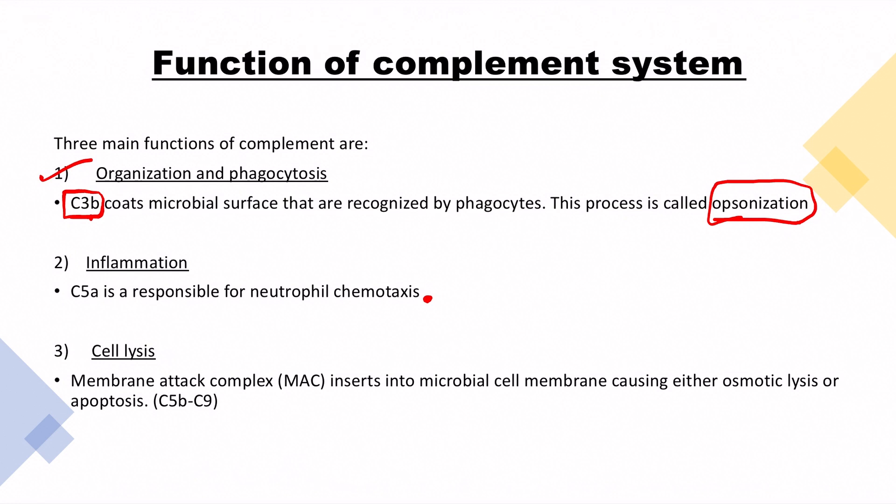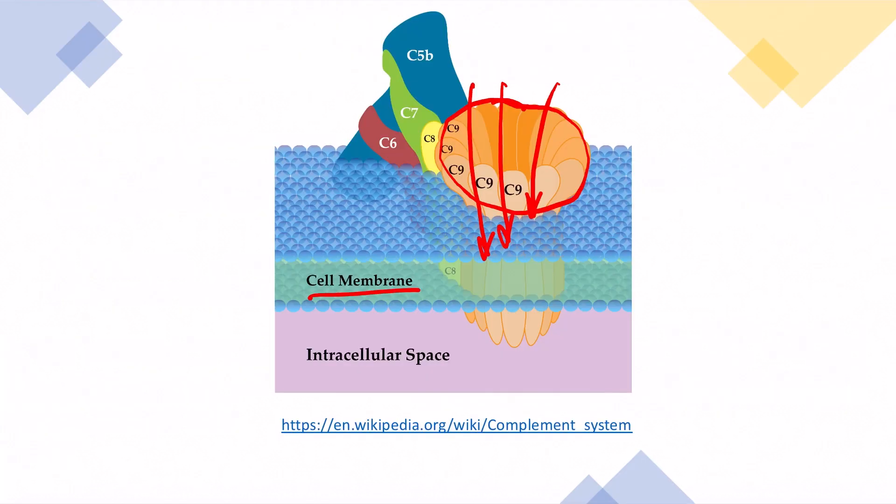Third is cell lysis. Here we have a membrane attack complex that inserts into a microbial cell membrane causing either osmotic death or apoptosis and the MAC complex basically consists of C5B to C9. As you can see it's C5B, C6, C7, C8, and C9.